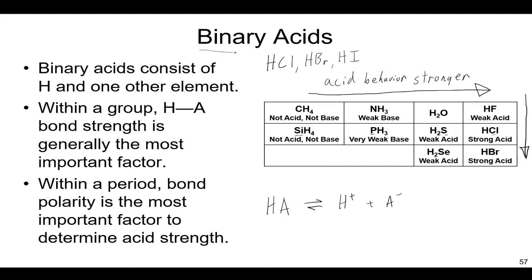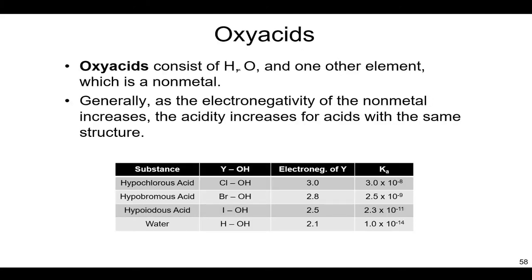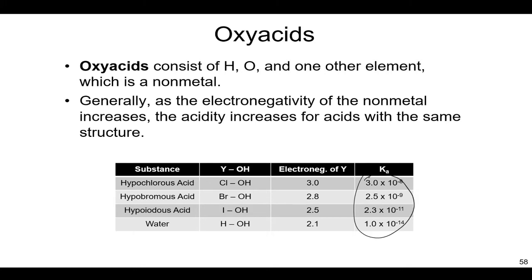A second type of acid is not a binary acid but an oxyacid. Oxyacids consist of hydrogen, oxygen, and one other element, usually a nonmetal. We have a list of different oxyacids here: hypochlorous acid, hypobromous, hypoiodous. These behave as weak acids differently. You can have strong oxyacids — H2SO4, for example — but what we're showing here is that these listed acids are all weak acids, and here are their Ka values.